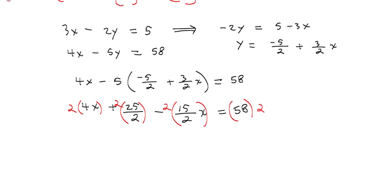Now, that gives us 8x here, plus, well, the 2's cancel, so it's just 25. Here, the 2's cancel, so it's minus 15x is equal to 2 times 58, would be 116.